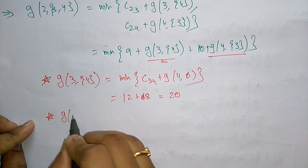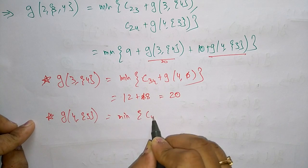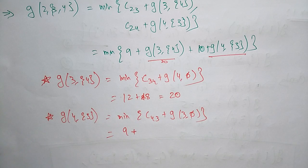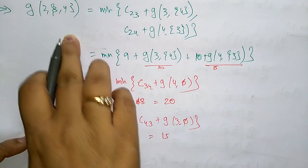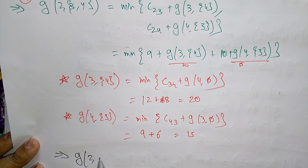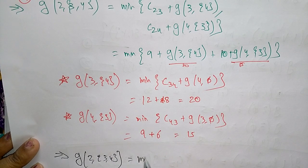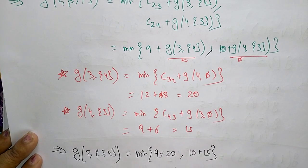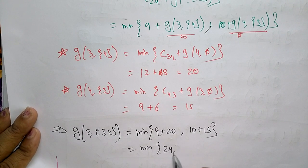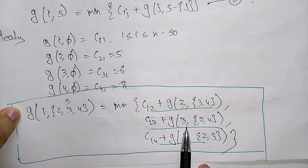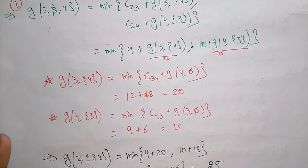Substituting back into g(2, {3,4}): minimum of 9 plus 20, and 10 plus 15, which is minimum of 29 and 25, giving us 25. Therefore g(2, {3,4}) equals 25. This value will be substituted back into the main equation. We will continue solving the remaining sub-problems in the next video. Thank you.